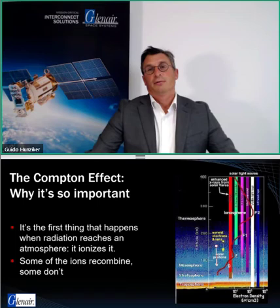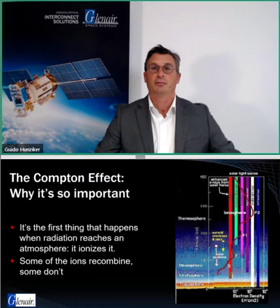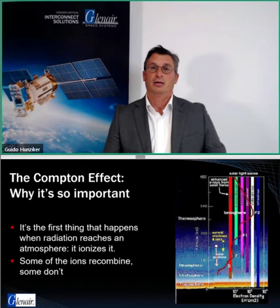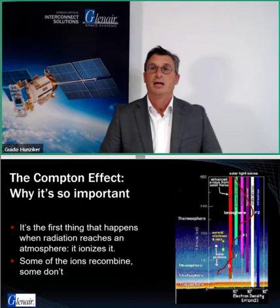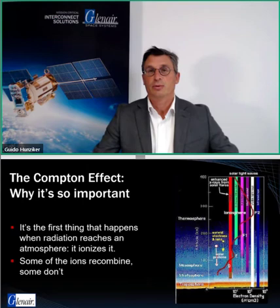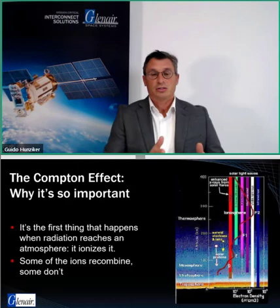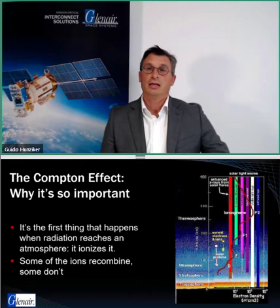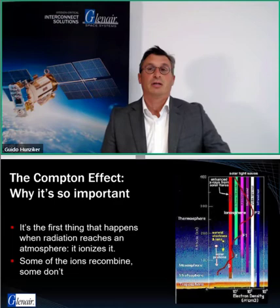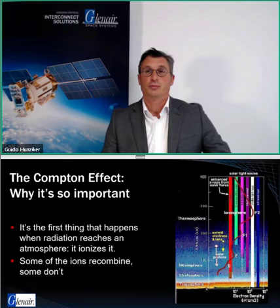This Compton effect is the first thing that happens when radiation from the sun hits our atmosphere. The atmosphere gets more diluted as we go further from Earth, and what's left gets hit hard by electrons and photons of various energies. In the ionosphere we have infrared, visible, X-ray, and gamma ray radiation all interacting with what's there. The visible part of the spectrum makes it through well — that's why we can see sunlight on Earth — but other spectral content from solar radiation is blocked by our atmosphere.